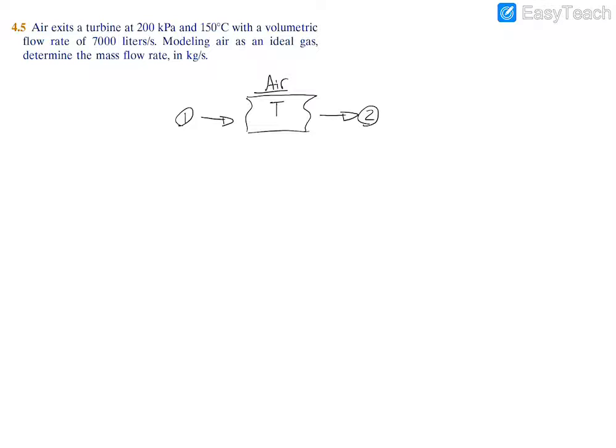We're not given anything at the entrance, but at the exit we're told that the state has a pressure of 200 kilopascals, a temperature at the exit of 150 degrees Celsius, and a volumetric flow rate of 7,000 liters per second.